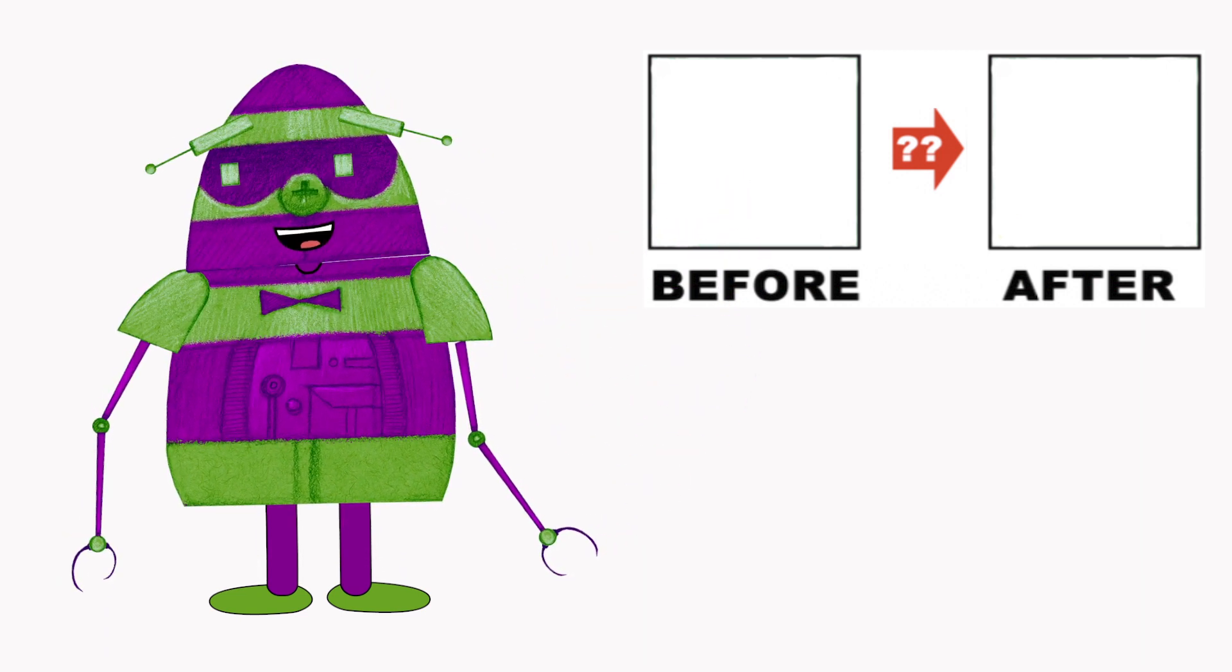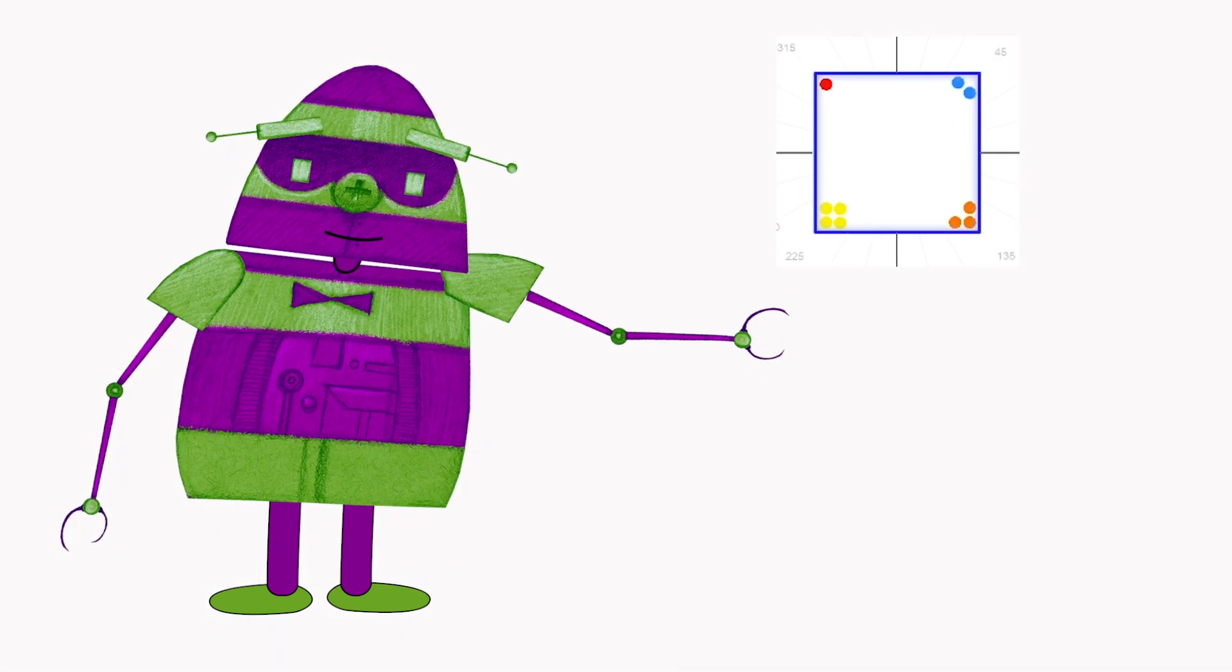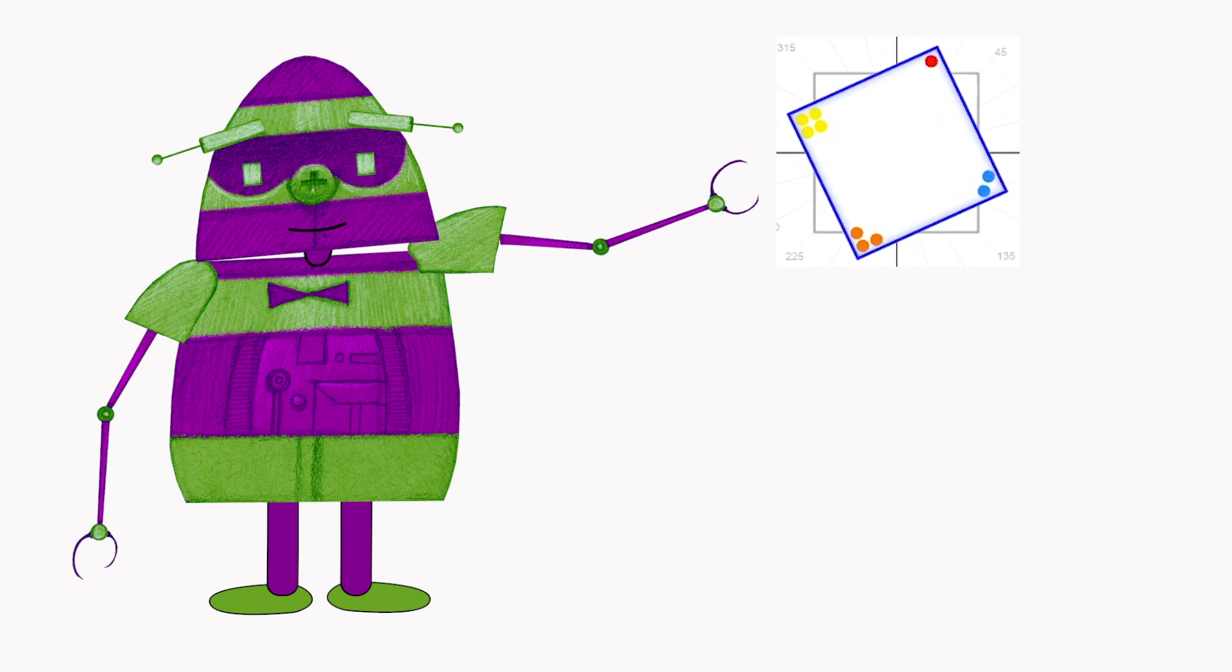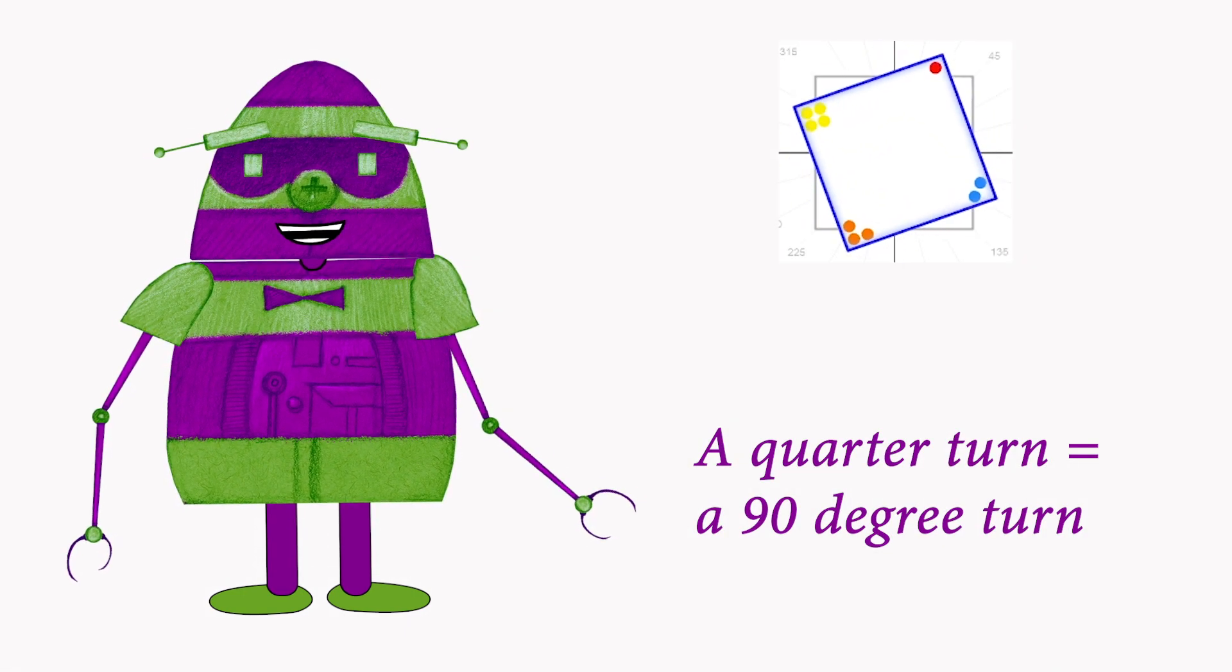Did I rotate the square? Maybe a quarter turn, like this? A quarter turn is the same as a 90 degree turn.